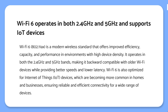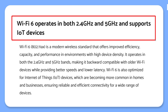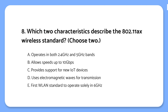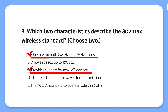Question 8 knowledge points: Wi-Fi 6 operates in both 2.4 GHz and 5 GHz and supports IoT devices. Wi-Fi 6 is the latest wireless standard; it works on both 2.4 GHz and 5 GHz, offering better speeds and supporting more devices including IoT gadgets. It's designed to handle a lot of devices at the same time without slowing down. The correct answers are: Wi-Fi 6 works on both 2.4 GHz and 5 GHz bands, making it compatible with older devices and better for new IoT devices.